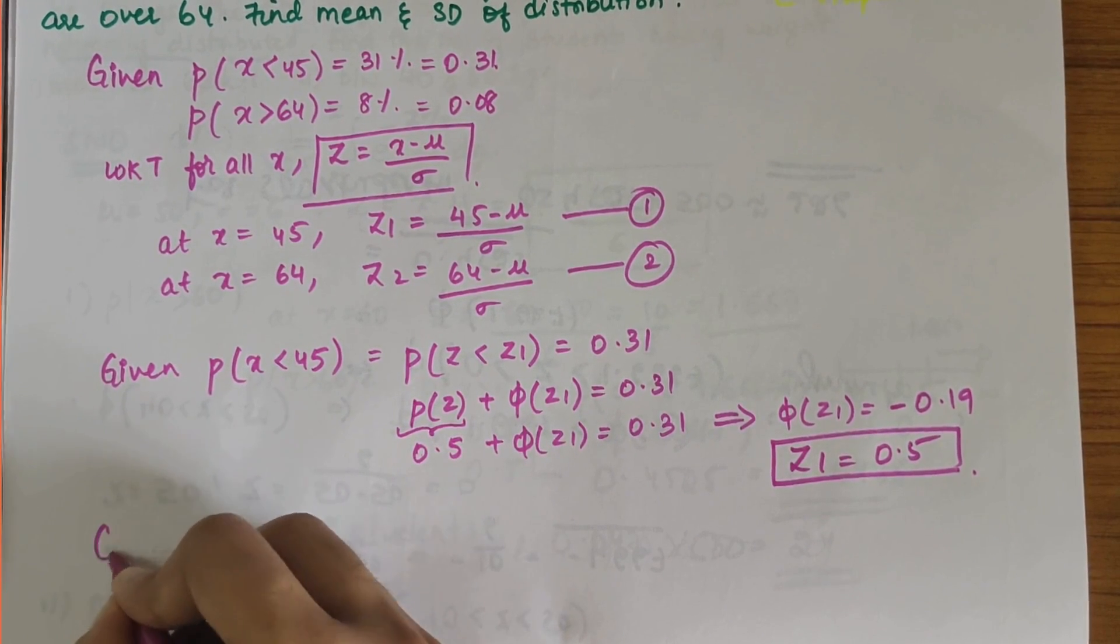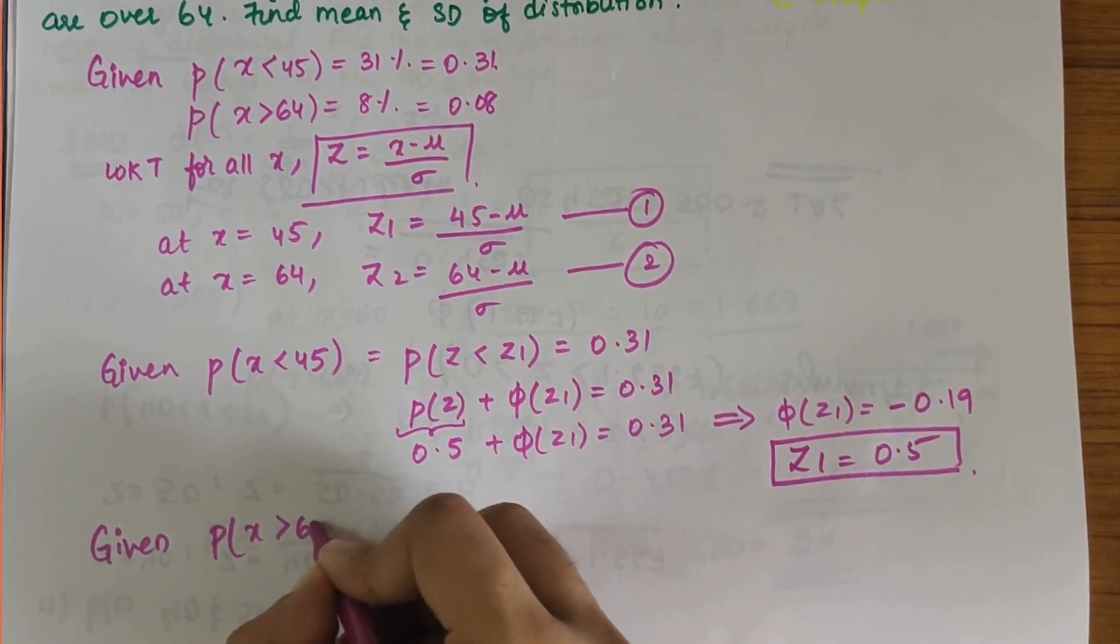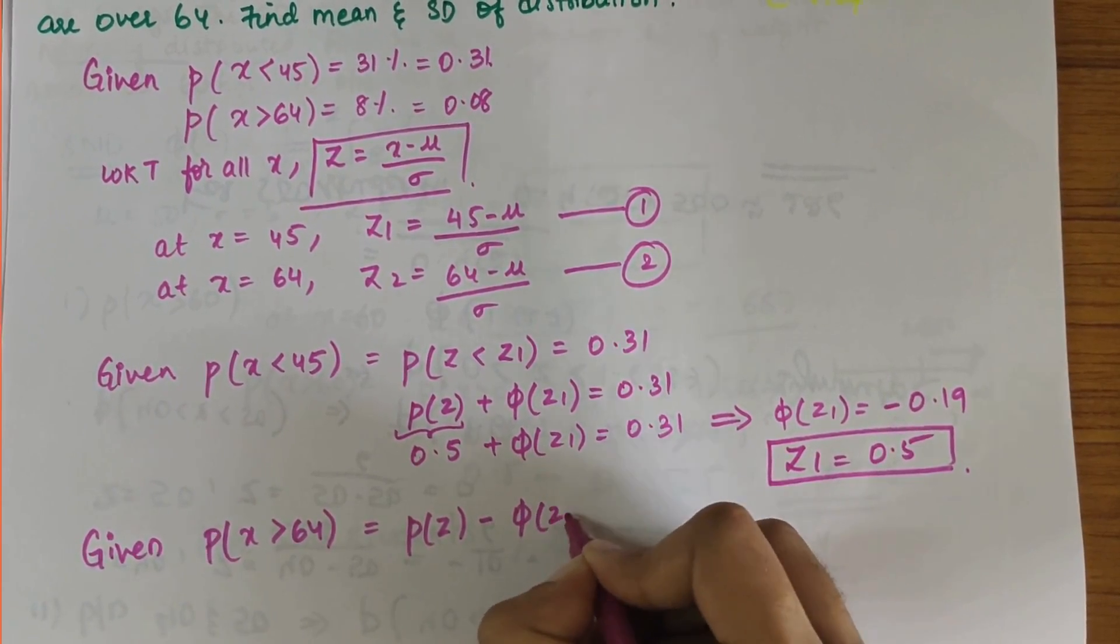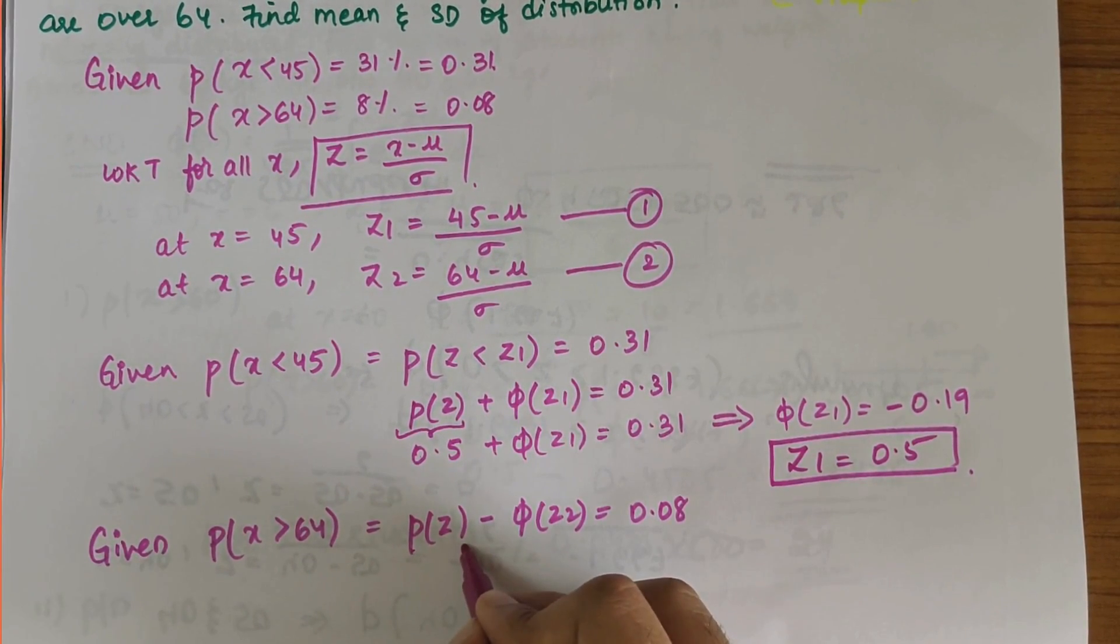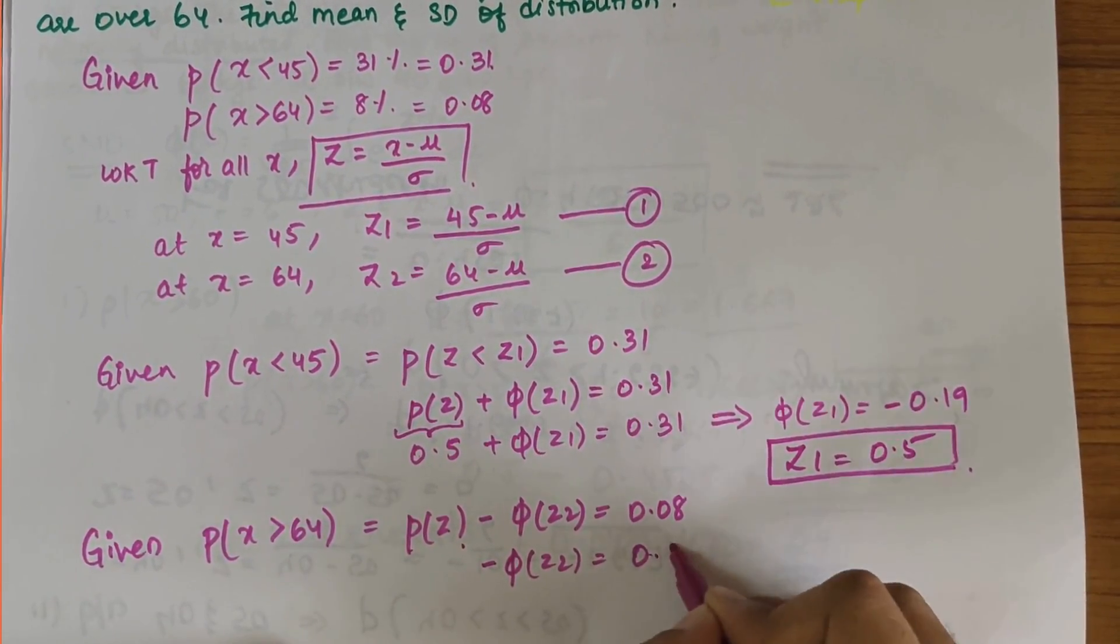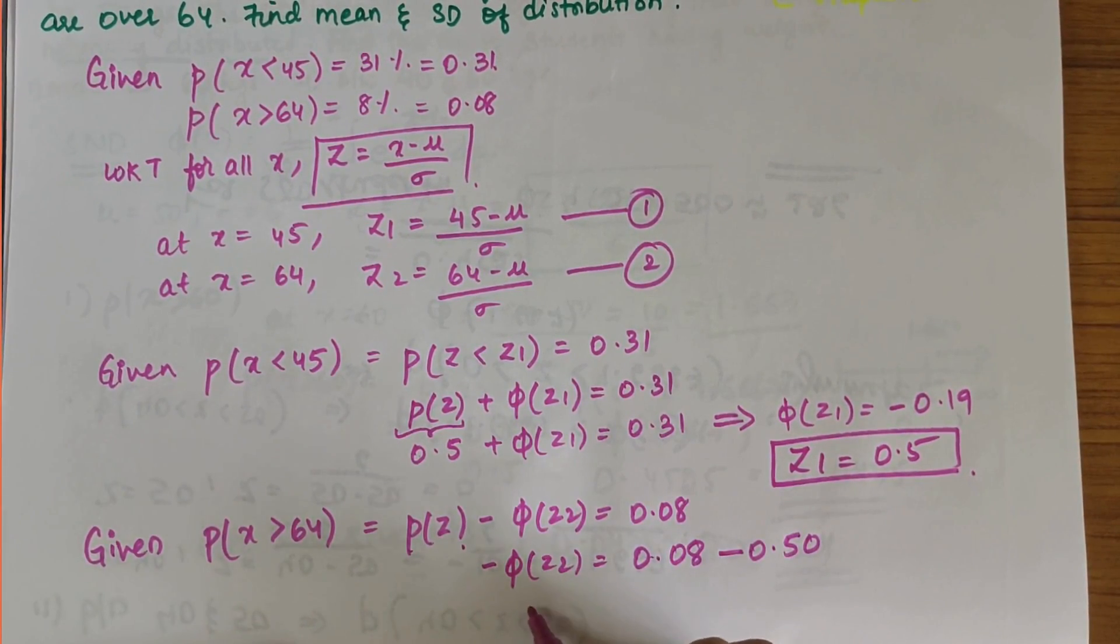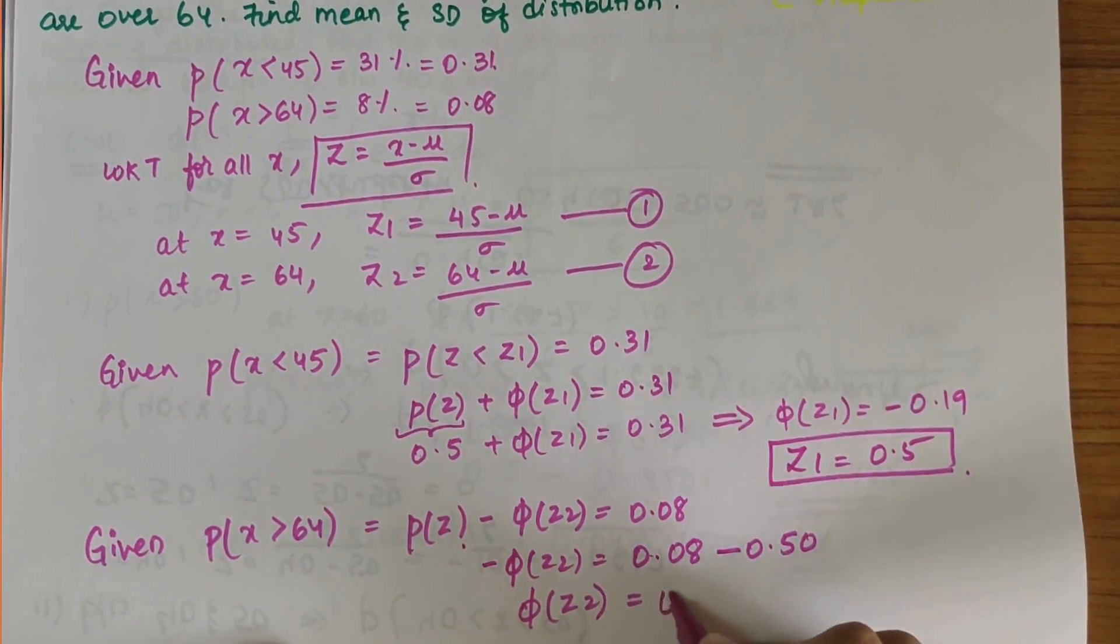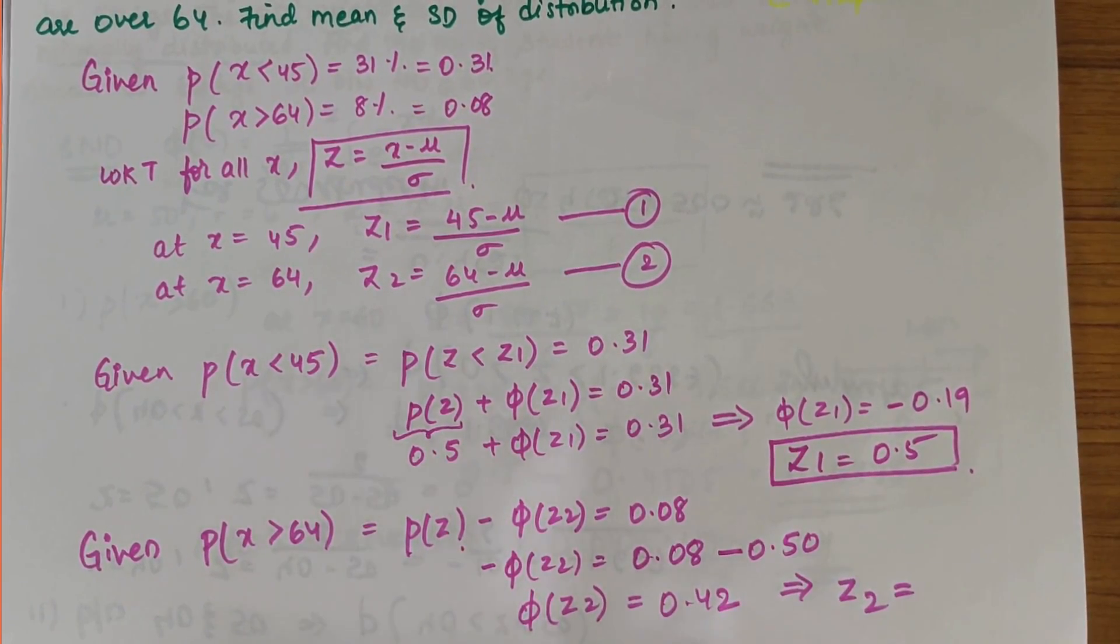Similarly, they have given that P(X > 64), that means P(Z) - φ(Z2) = 0.08. We know that P(Z) = 0.5, so -φ(Z2) = 0.08 - 0.50.